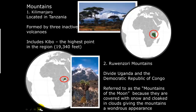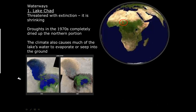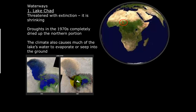The next topic is waterways. Lake Chad is the first waterway we'll discuss. The important thing to remember about Lake Chad is that it's shrinking. The main reasons are droughts and its proximity to the Sahara Desert. Since about the 1970s, droughts have dried up the northern portion of Lake Chad. The two pictures shown — an aerial photograph from 1972 on the left and one from 1987 on the right — show just how much the lake has shrunk over that period.